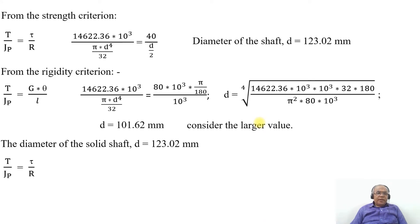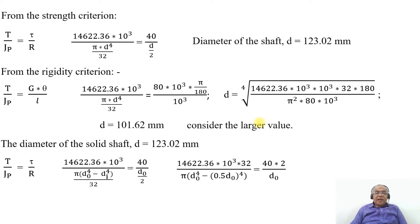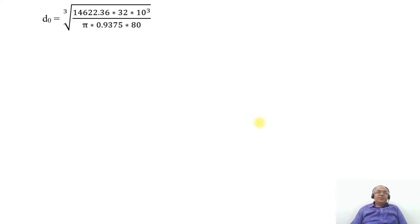For the hollow shaft using the strength criterion, T/J = τ/R. Substituting T = 14622.36 × 10³, J = (π/32)(d0⁴ − di⁴), and since d0 = 2di, di = 0.5 × d0. After cross multiplication and simplification, d0 = cube root of [14622.36 × 32 × 10³ / (π × 0.9375 × 80)], giving d0 = 125.7 mm.